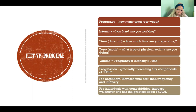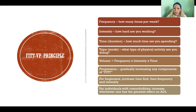Intensity is how hard you are working — what level of METs we're working at, or however we measure or assess intensity. And then time means the duration, so how long each exercise session is, or how much time you're spending in total per day or per week.